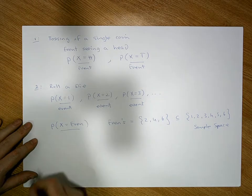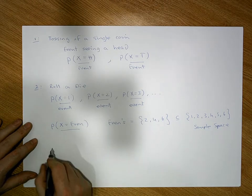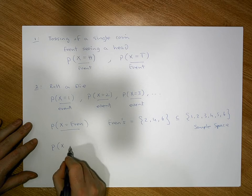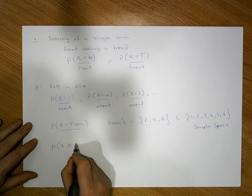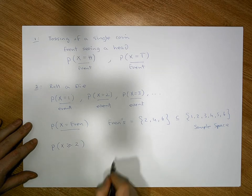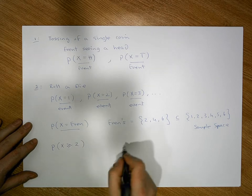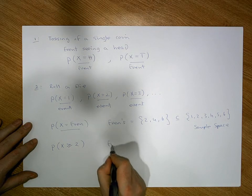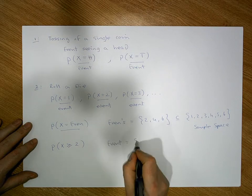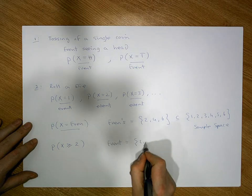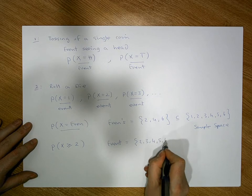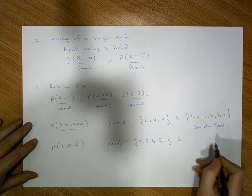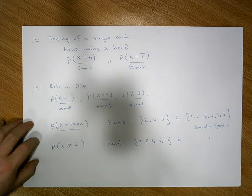We might ask, what's the probability that when I roll a die, I get a number greater than or equal to 2? This event is the numbers 2, 3, 4, 5, and 6. These are a subset of the sample space, so they are events.